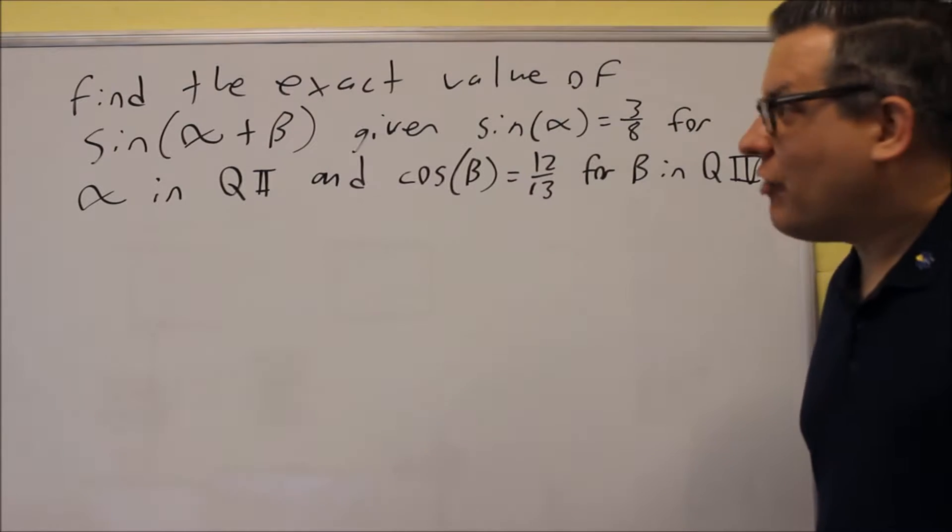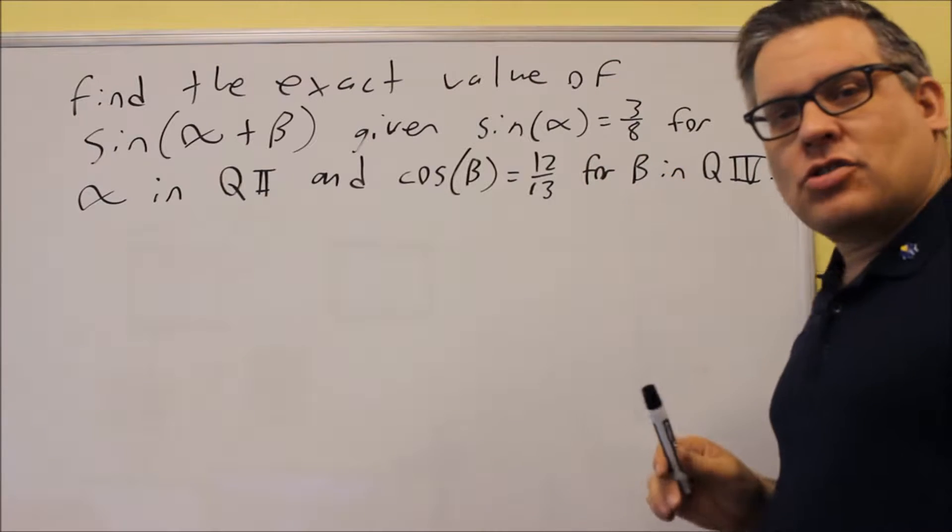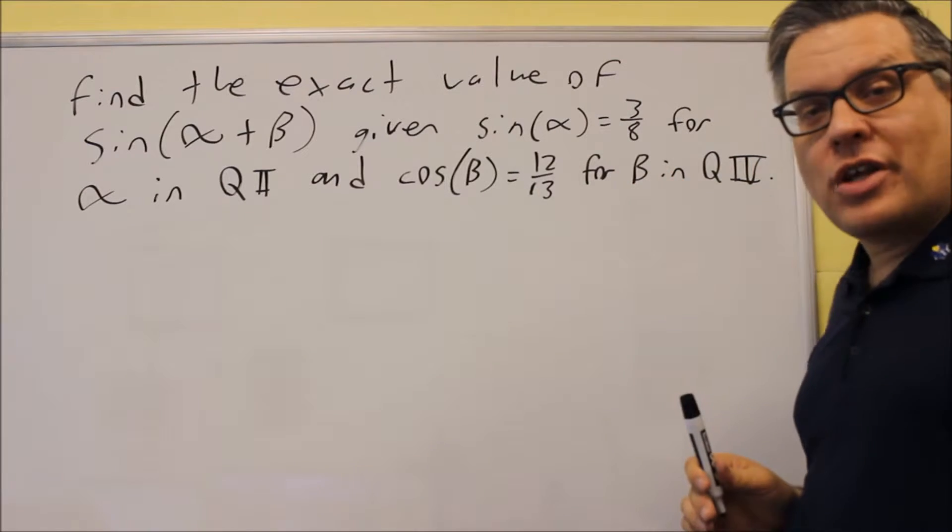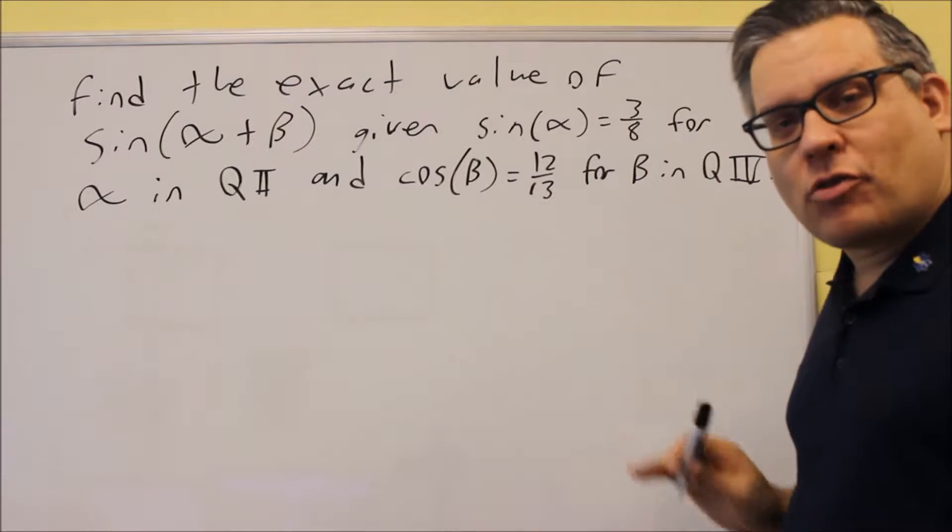Okay, so this one's asking us to find the exact value for sine alpha plus beta, but we're given some information here. We're given that sine alpha is 3 eighths in quadrant 2, and cosine beta is 12 thirteenths, quadrant number 4.